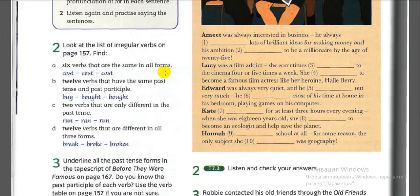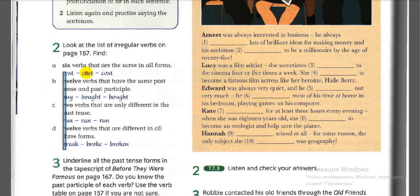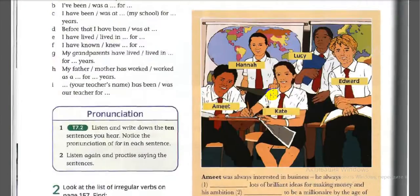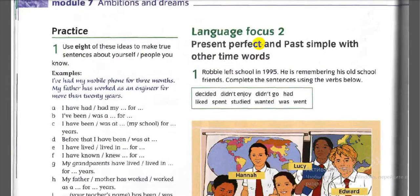Six verbs that are the same in all forms. You should learn irregular and regular verbs by heart. For example: cost–cost–cost; cut–cut–cut; run–run–run; break–broke–broken. The columns are: infinitive, past simple, and past participle.